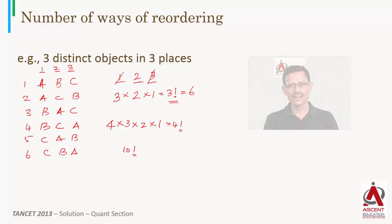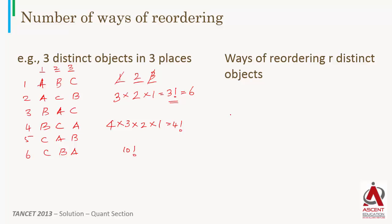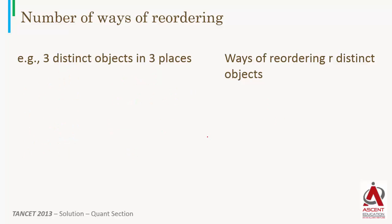So we arrive at a general expression: the number of ways of reordering R objects — whether 4 students, 10 students, or R students — is R factorial. In how many ways can R distinct objects be reordered? They can be reordered in R factorial ways. Part 1, theory, is now over.